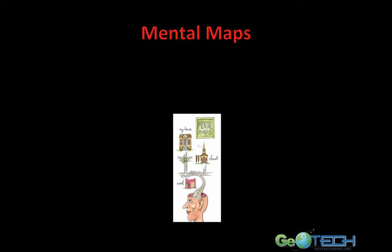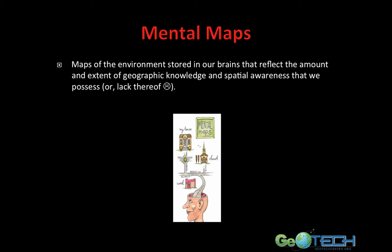This segues into mental maps. Mental maps are maps of the environment stored in our brains that reflect the amount and extent of geographic knowledge and spatial awareness that we possess — or lack thereof. Our geographic knowledge and spatial awareness can increase with experience and with time.